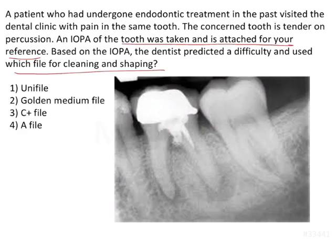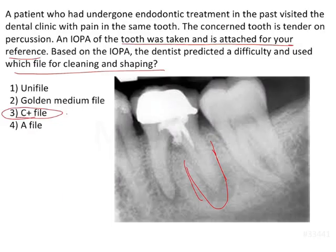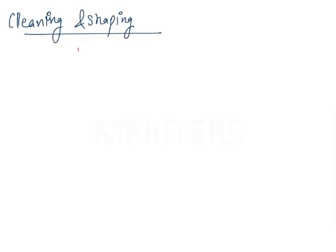Looking at the IOPA, calcification in the canal is evident on this X-ray. For calcified canals, cleaning and shaping requires a really stiff file with a lot of irrigant and lubricant. The stiffest file that can be used in this case is the C plus file.